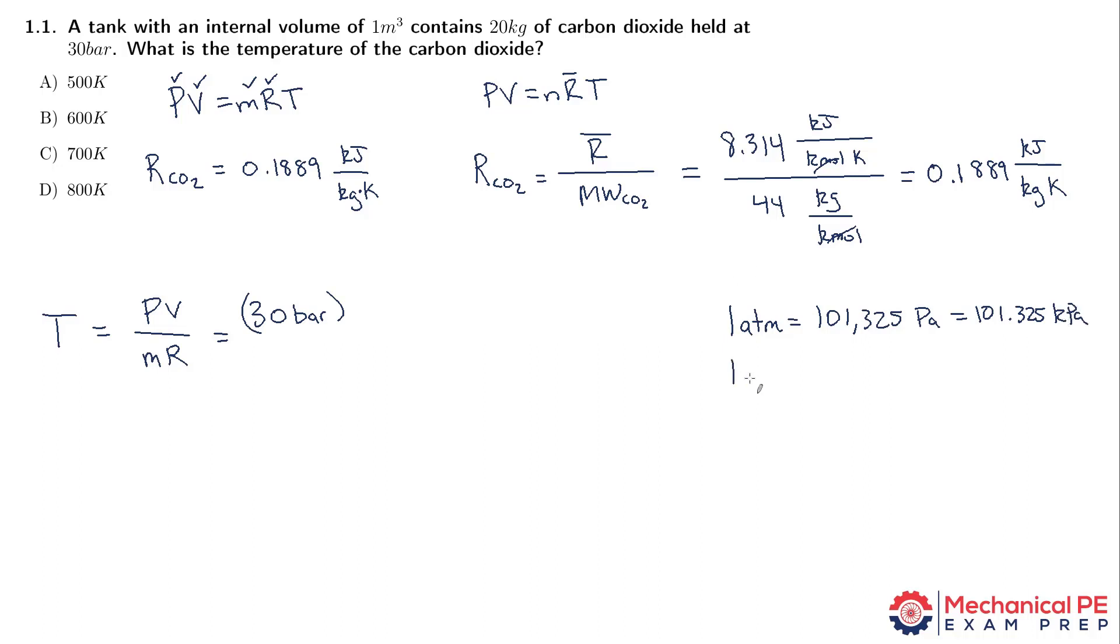A bar is very similar to an atmosphere. It's a bit smaller. So instead of 101,325, it's just 100,000. So it's just a touch less than an atmosphere. And of course, you can just divide that by 1,000 as well. So it's 100 kPa.